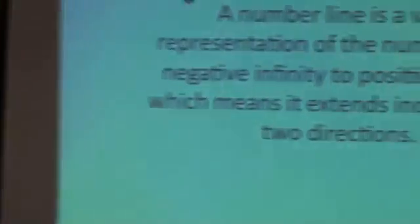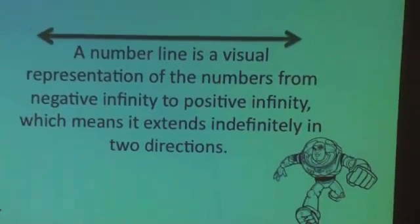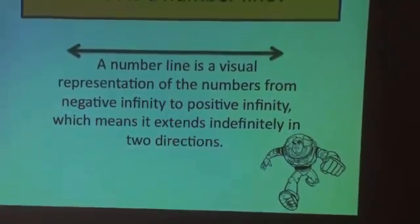So what is a number line? We've seen this kind of number line. It's a visual representation of numbers from negative infinity to positive infinity. That means it extends indefinitely in two directions. So we've kind of focused in now. I want to show you some examples of number lines.